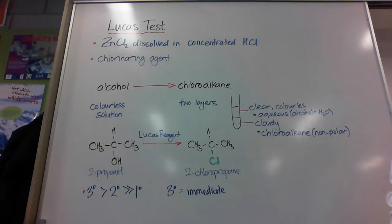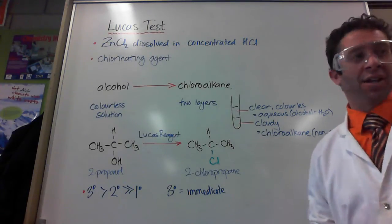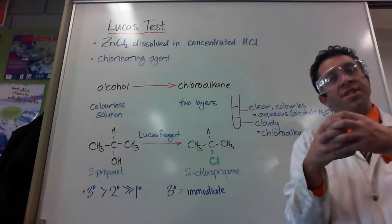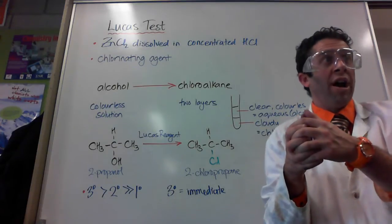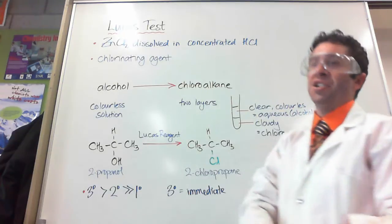It's called the Lucas test, using a chemical called the Lucas reagent. The way that's made is we get anhydrous zinc chloride, so basically zinc chloride powder, and we dissolve it into concentrated hydrochloric acid. That gives us a solution with lots and lots of chloride ions, and that we call a chlorinating agent.